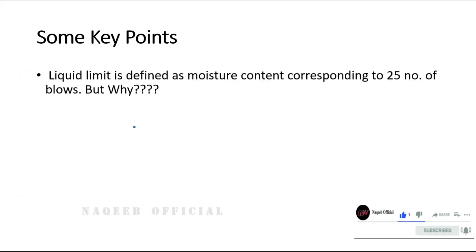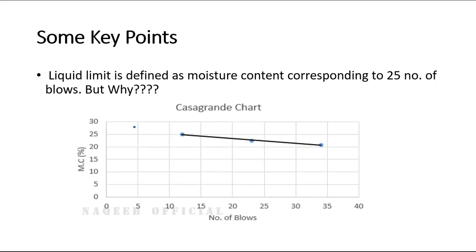The first key point: liquid limit is defined as moisture content corresponding to 25 number of blows. But why only 25 number of blows? Before answering this, let me show you a graph of how we basically determine the liquid limit. This is the end result of the test — we have number of blows along the x-axis, moisture content along the y-axis, and against 25 blows the moisture content is referred to as the liquid limit.